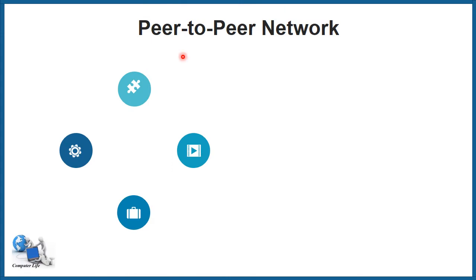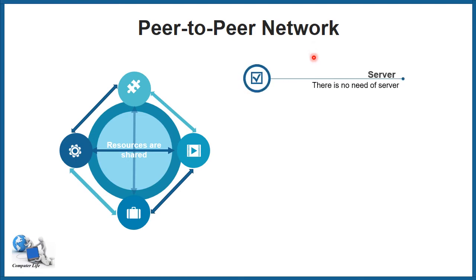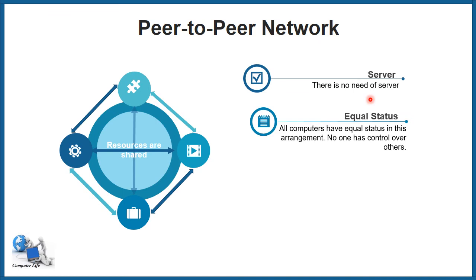The next model is peer-to-peer network, where all nodes are directly connected to one another and they establish a network. In this model, they can share their resources directly. There is no need for a dedicated server because each node can perform the function of a server. All computers have equal status — no one has control over others.